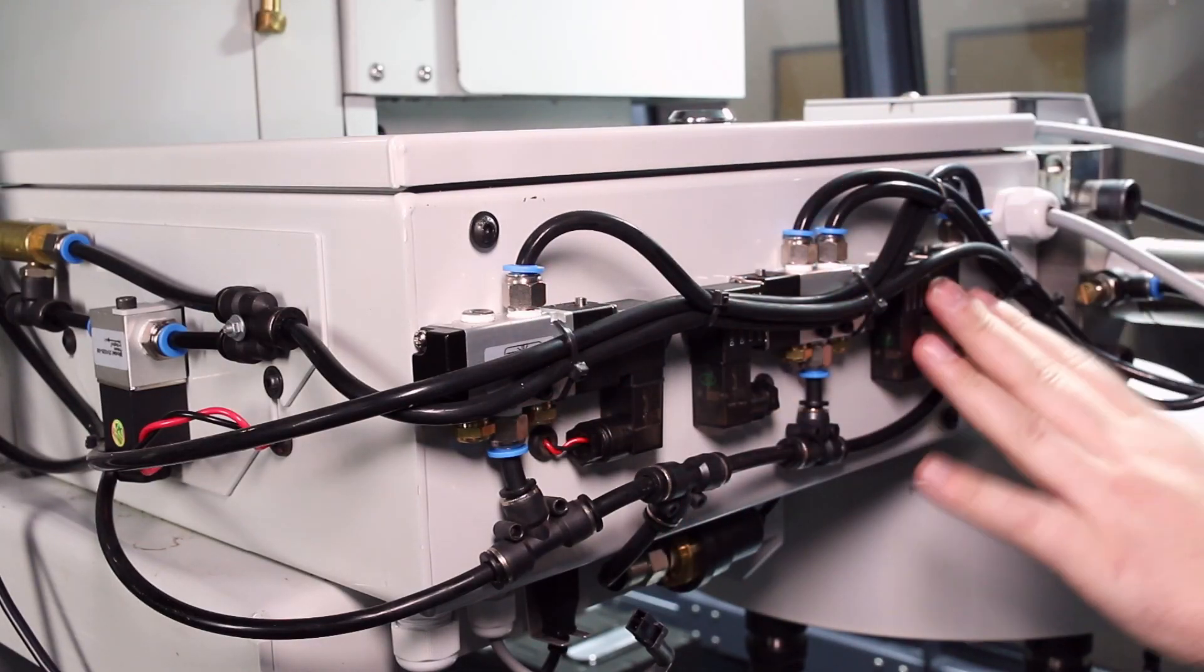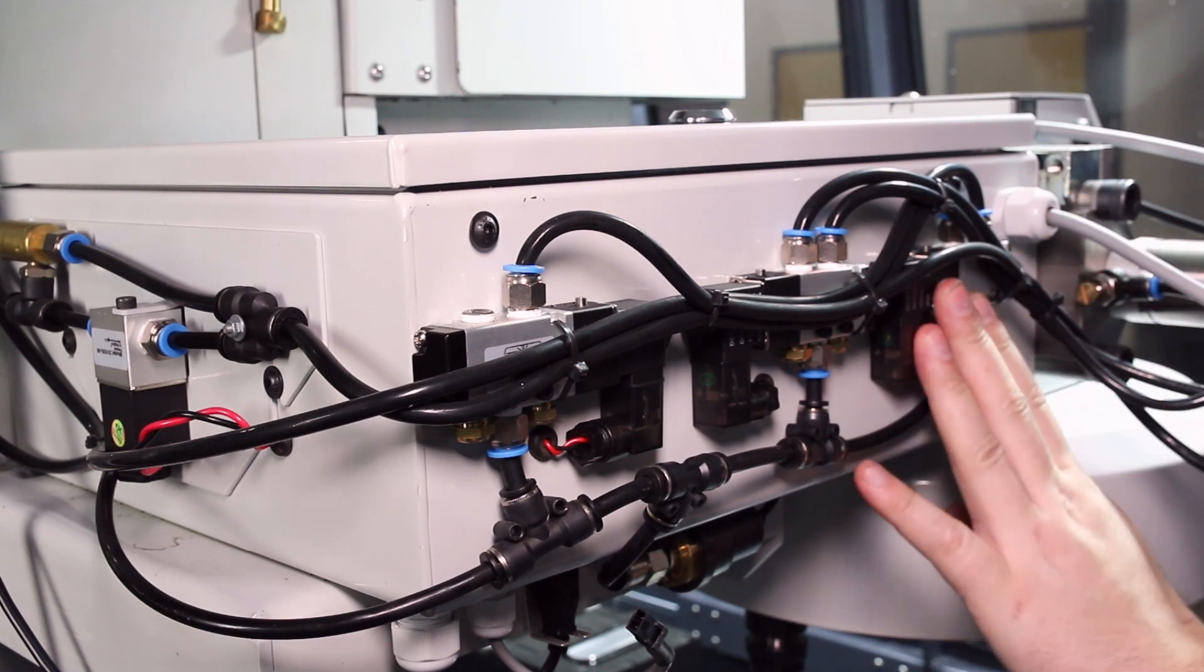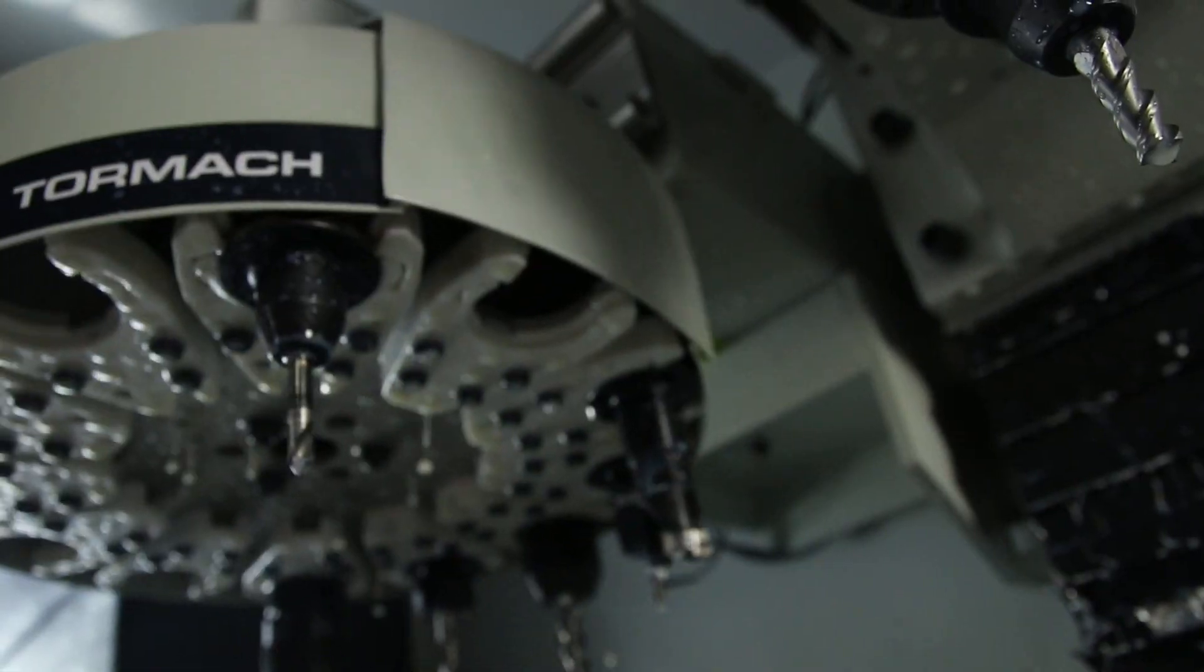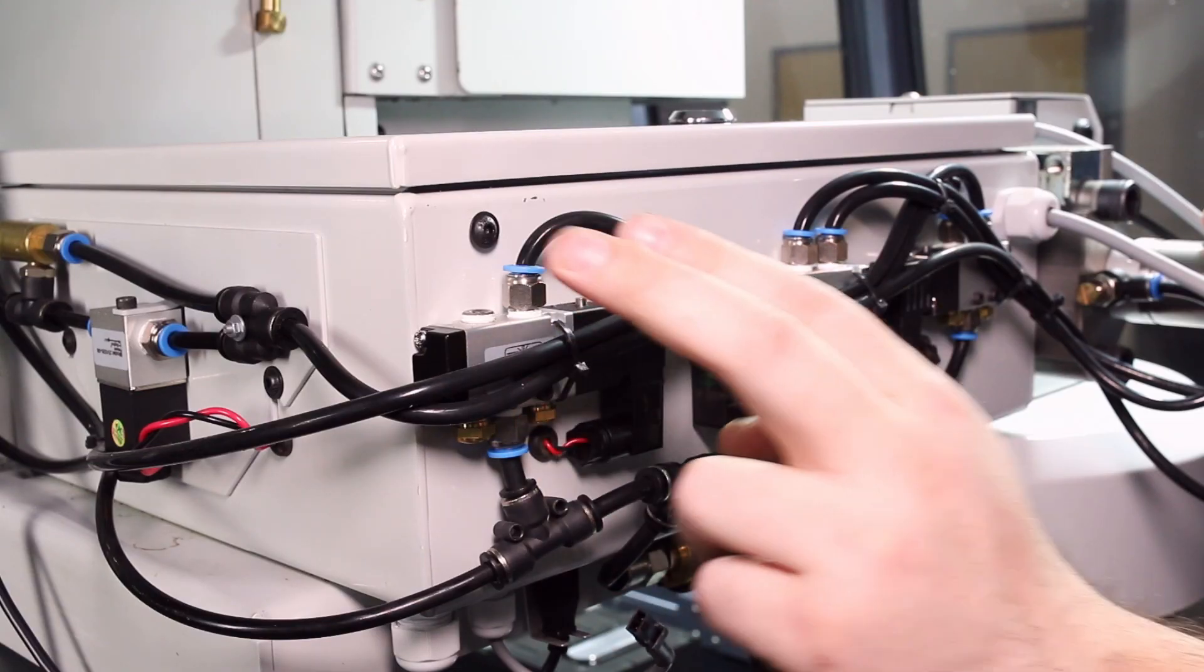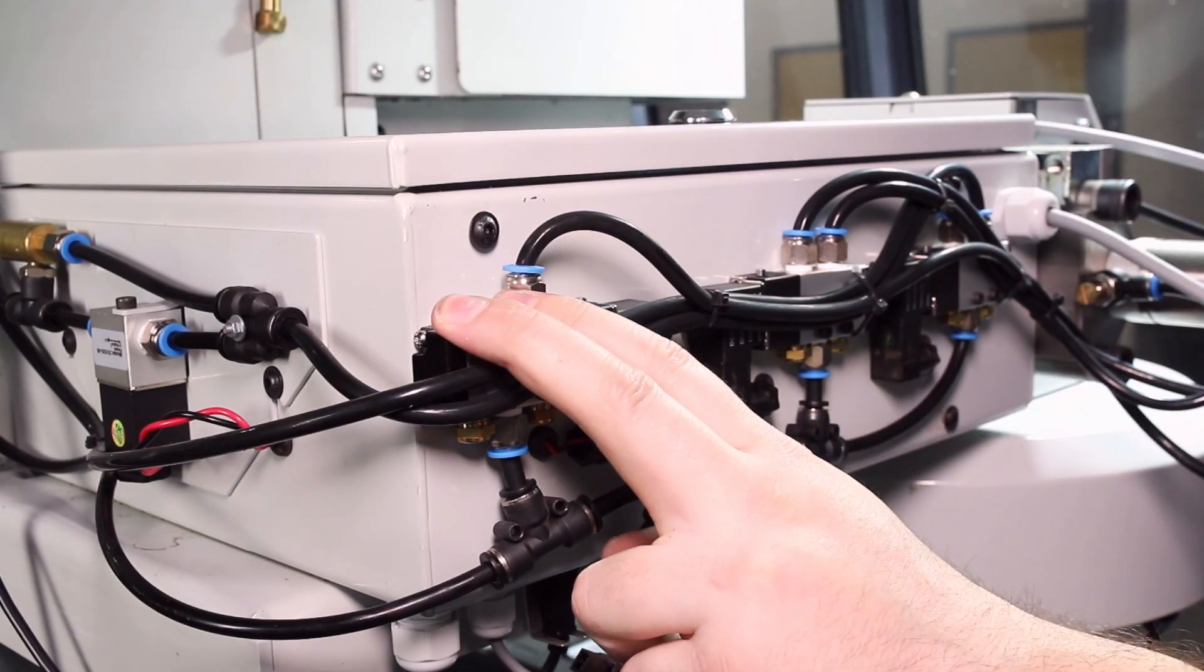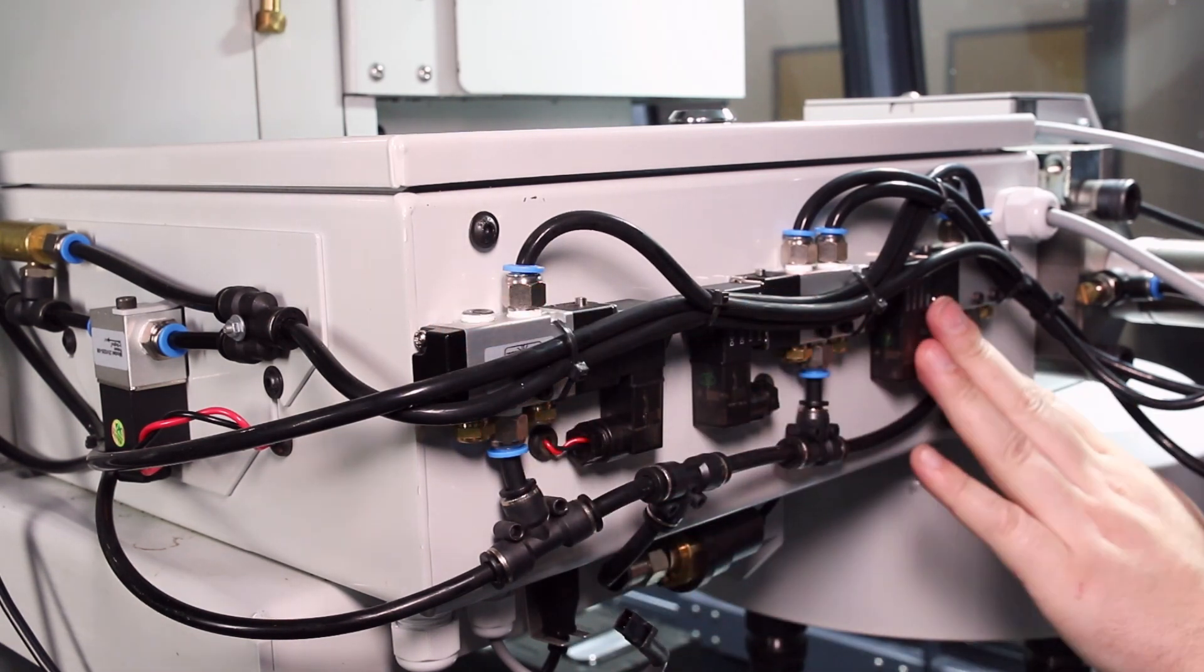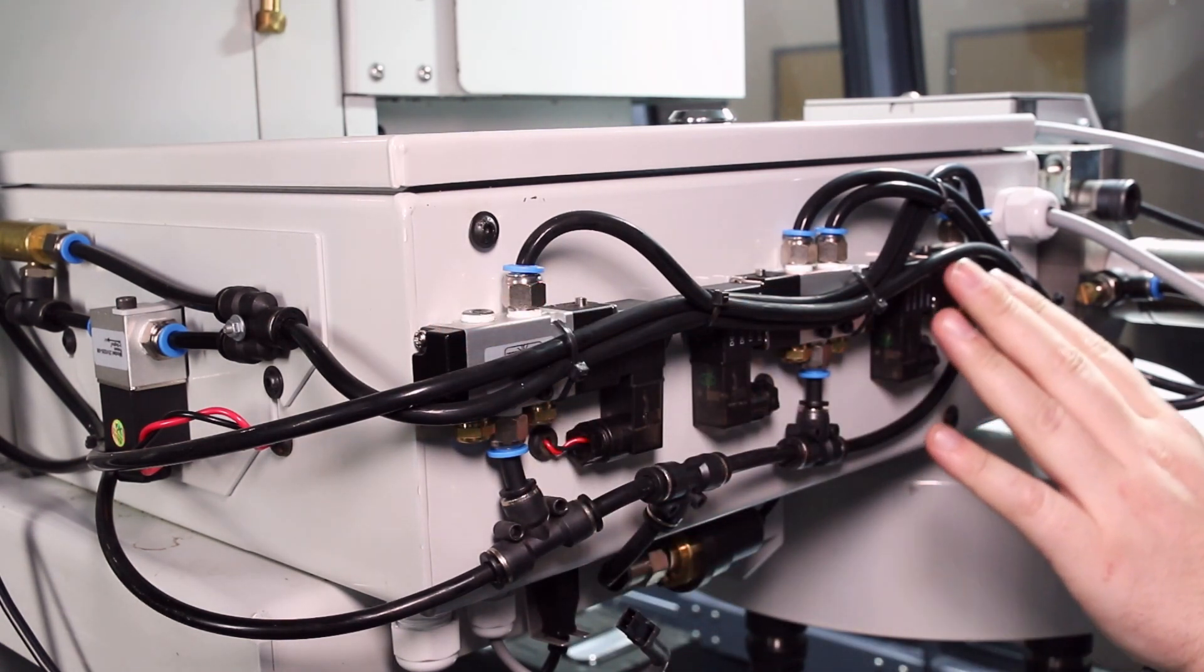These solenoids control the pneumatics. The solenoid closest to the front is the power drawbar cylinder. The middle solenoid is for the ATC carousel sensor and the rear solenoid is for the tool blast on the tools of the ATC. All three are the same model, so you can swap them around to troubleshoot issues.